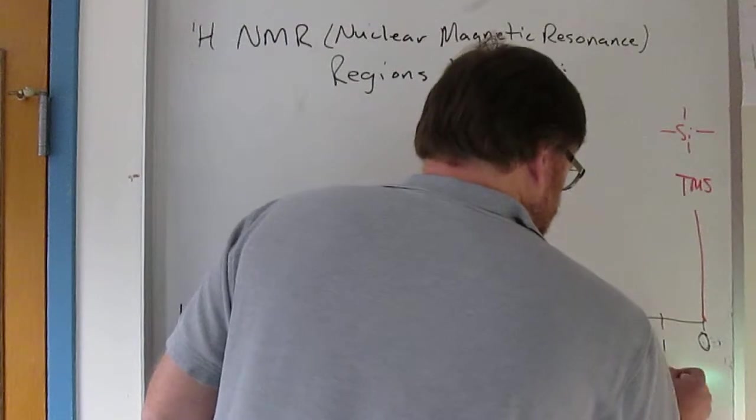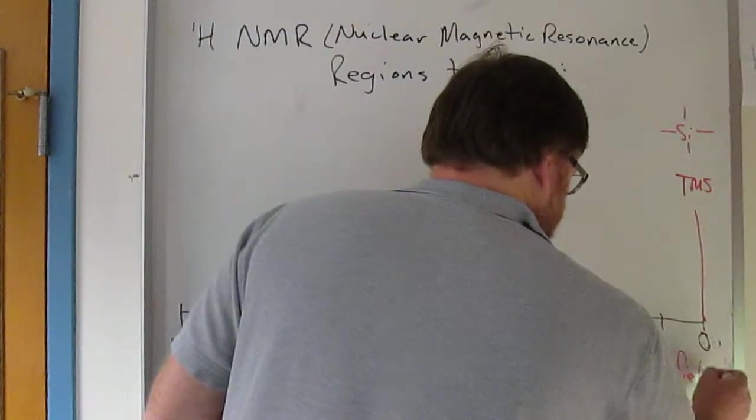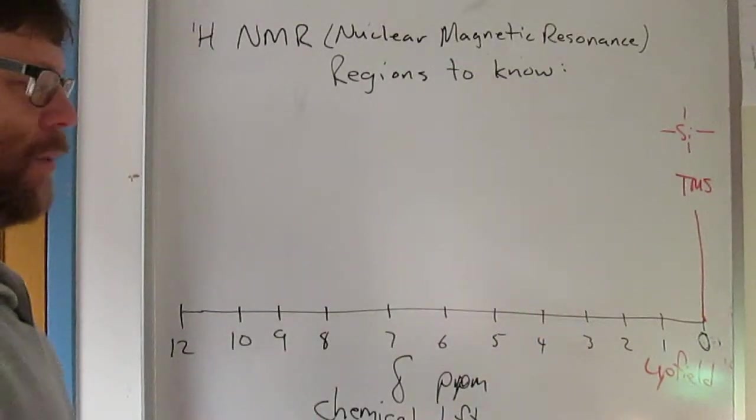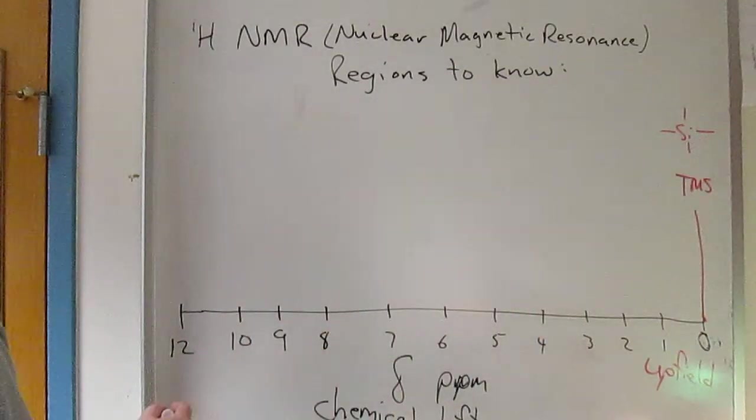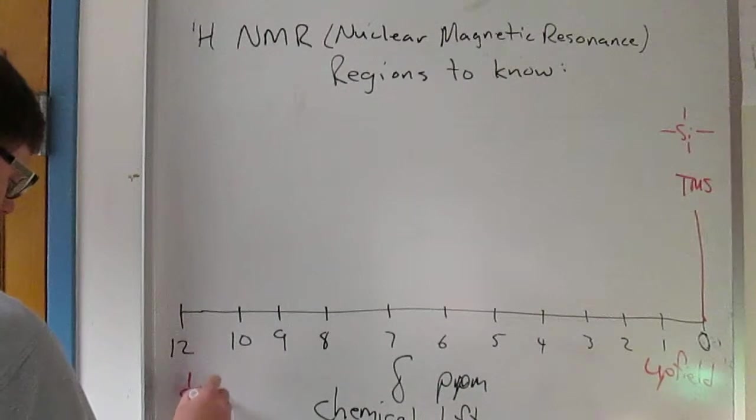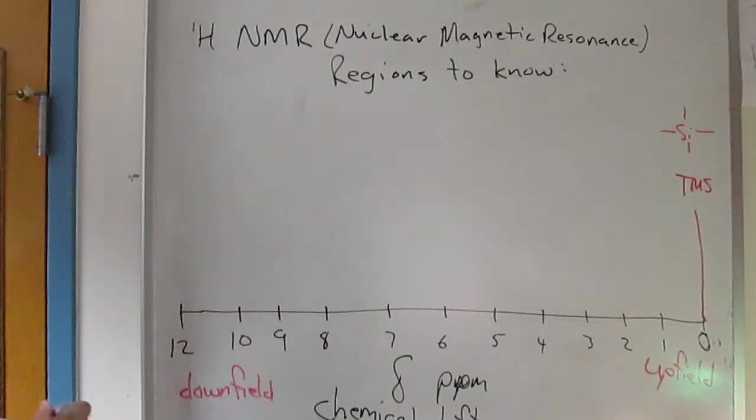As you get closer to zero, which is to the right of the spectrum, we call that upfield. As you go to the left, bigger numbers, we call this downfield.